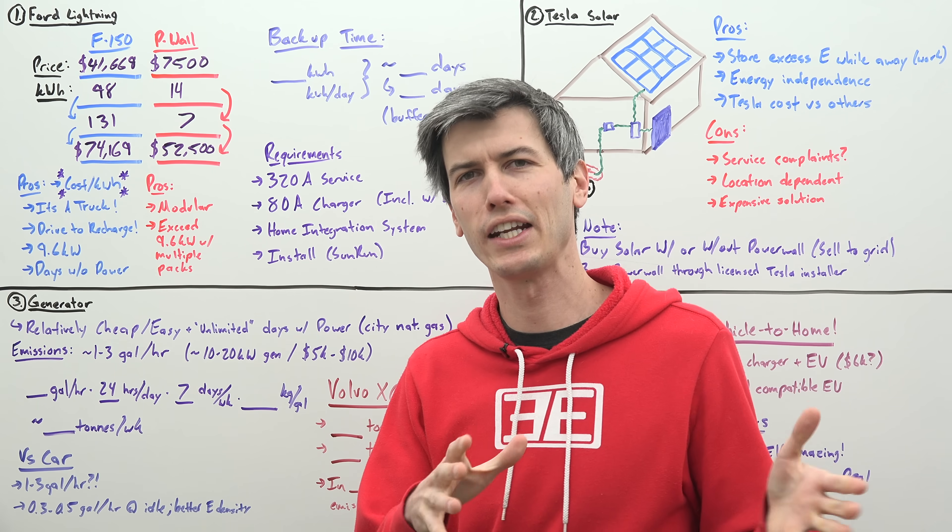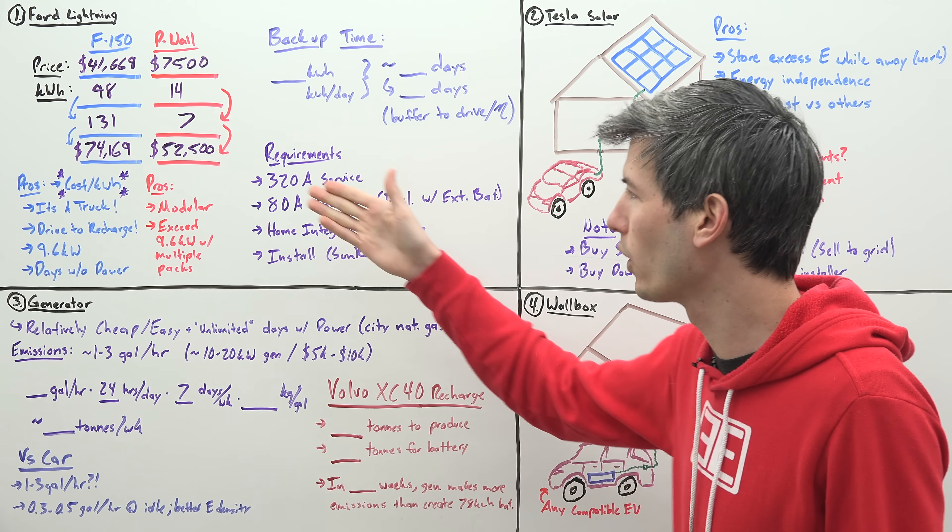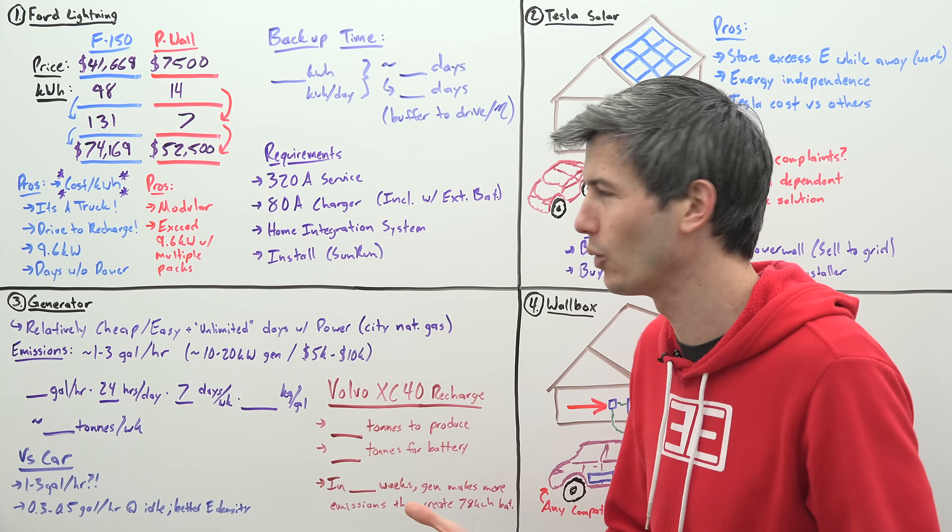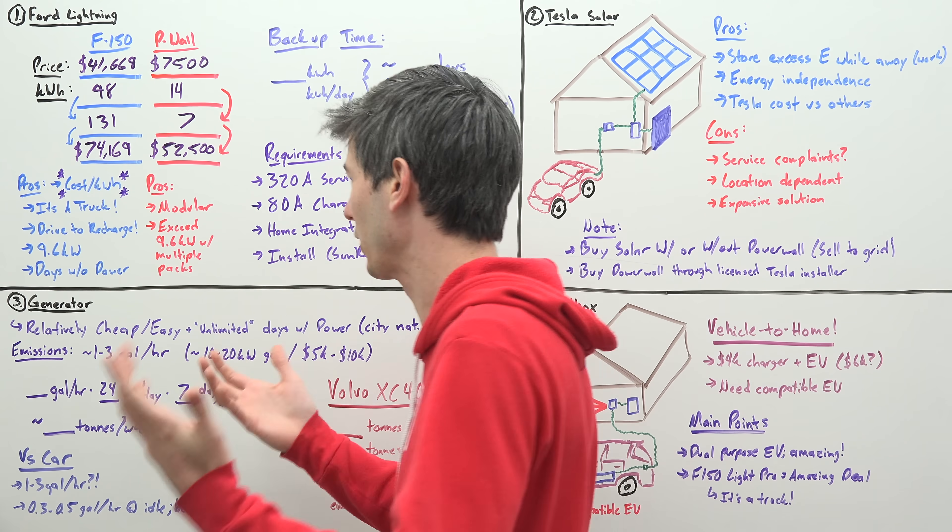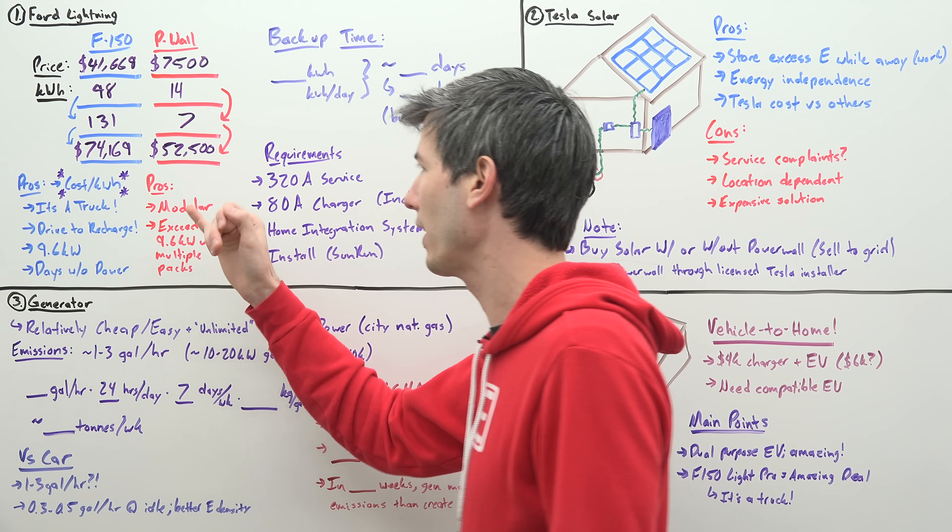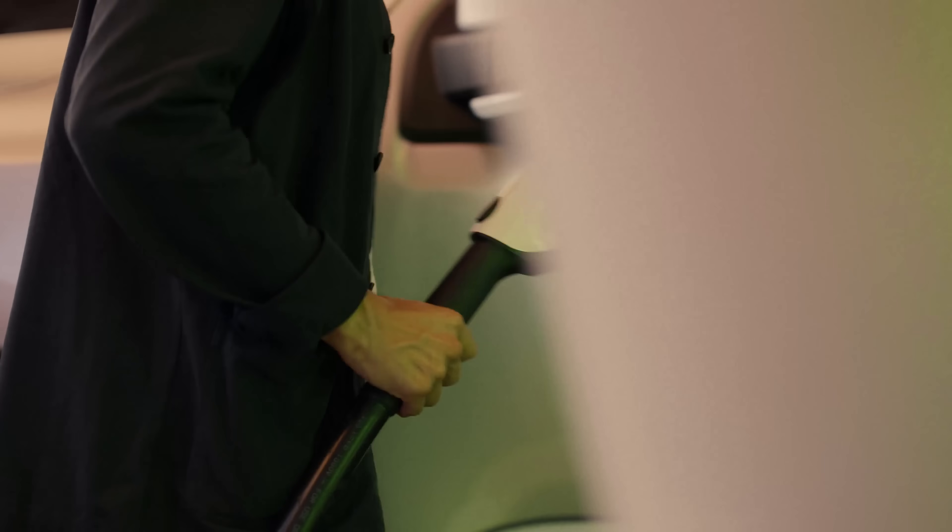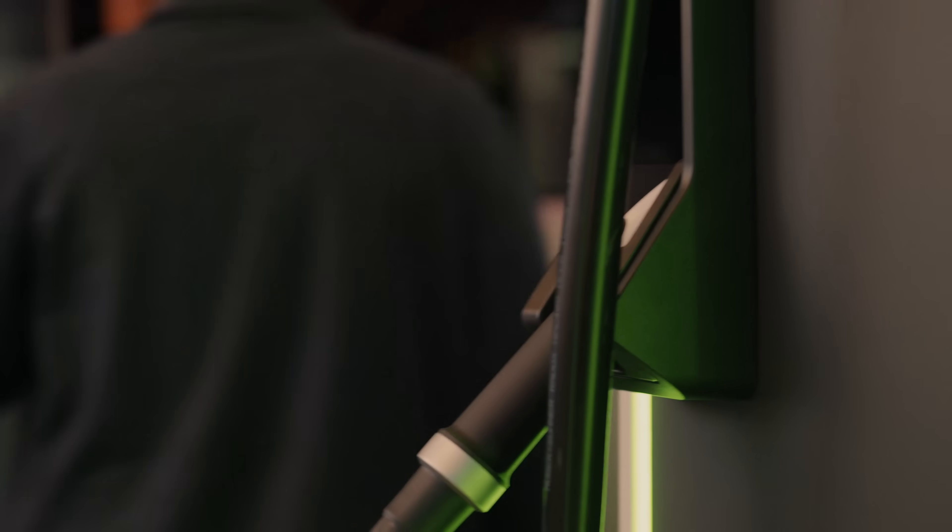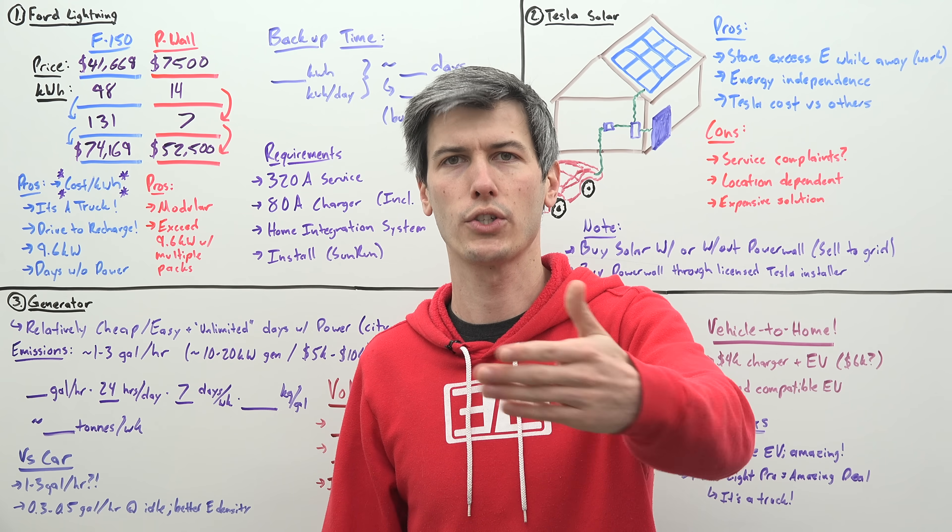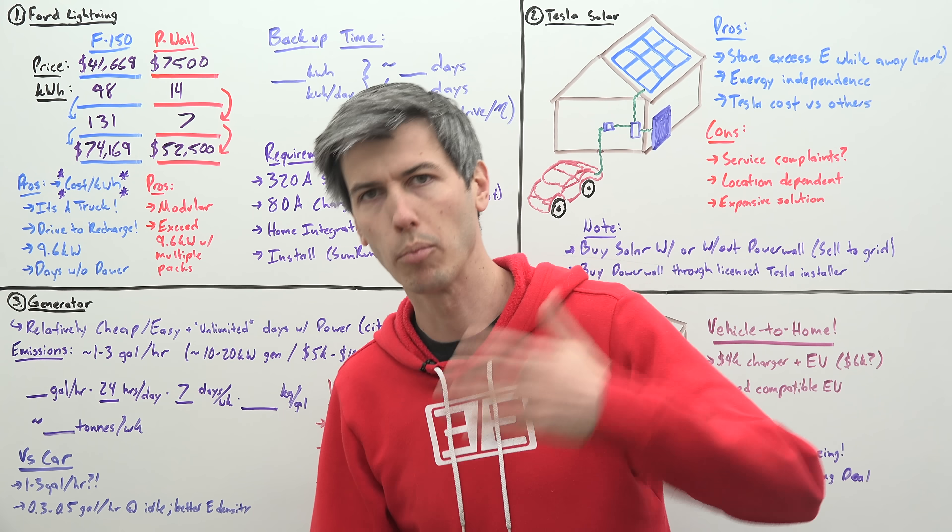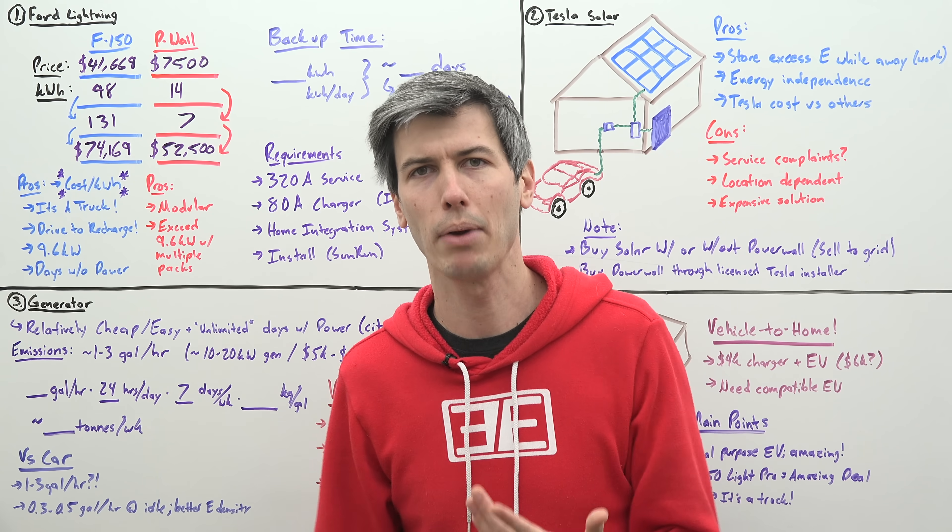So let's touch on the advantages of going either route. So if you go with the F-150, you get a truck included. That's pretty cool. You can do all the truck things with a truck. You have that huge cost per kilowatt hour advantage. You can drive to recharge it. Say there's a power outage. It lasts two days. You can drive your truck to a charging station, assuming that charging station still has power, recharge, bring your truck back, and then keep powering your home.